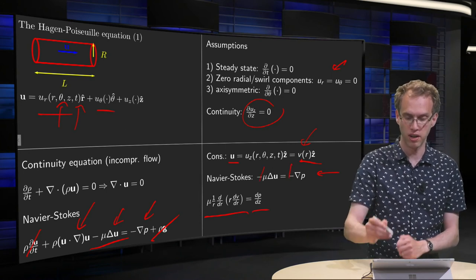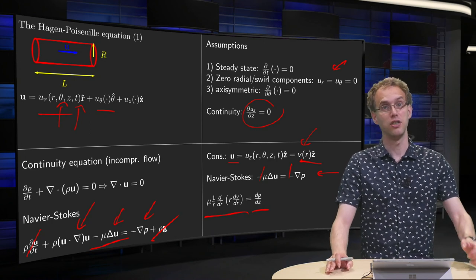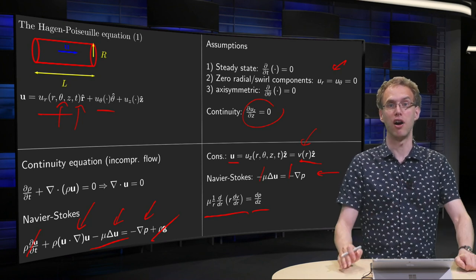So in the end, your Navier-Stokes equation has reduced, as you see, to an ordinary differential equation for v as a function of r.